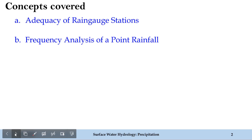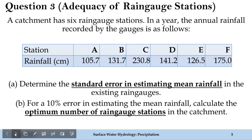These are the topics that will be covered today. Here is the third problem. Kindly note that this video is in sequence with the previous video — this is a lecture series and a follow-up of the previous video where we solved problems on precipitation data quality check. Now the focus will be on the remaining two concepts: the adequacy of rain gauge stations and frequency analysis of point rainfall.